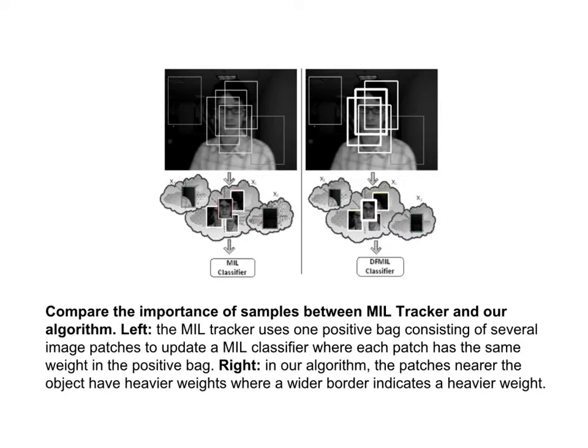Therefore, an ML tracker with a noise-over model may select less effective weak features. We integrate sample importance into the weighted geometric mean ML model and derive an online approach to maximize the bag likelihood to select discriminative features.